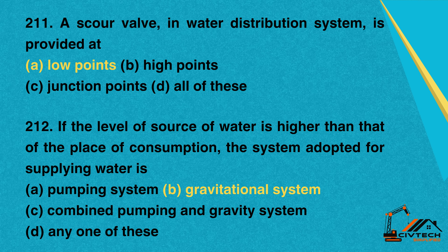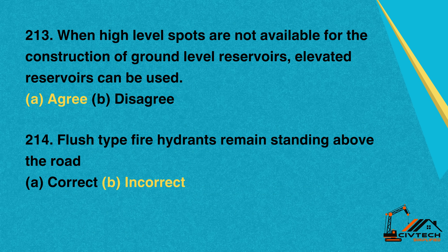Question 212: If the level of the source of water is higher than that of the place of consumption, the system adopted for supplying water is. A. Pumping system. B. Gravitational system. C. Combined pumping and gravity system. D. Any one of these. Correct option: B. Gravitational system.